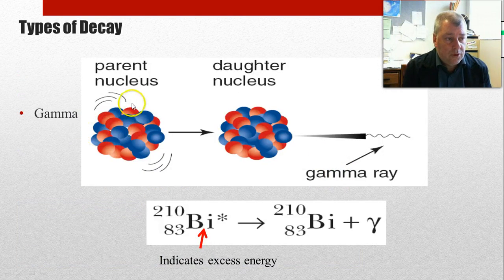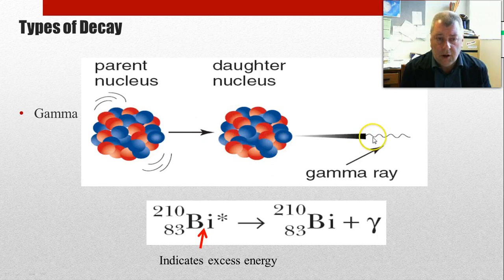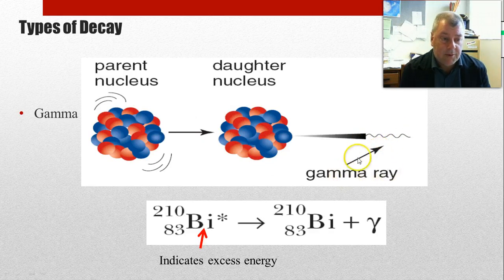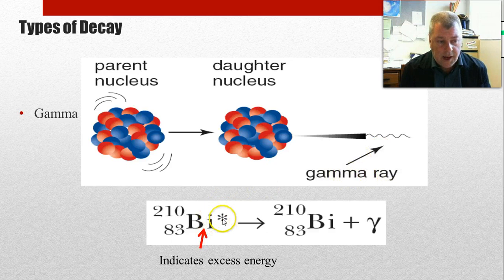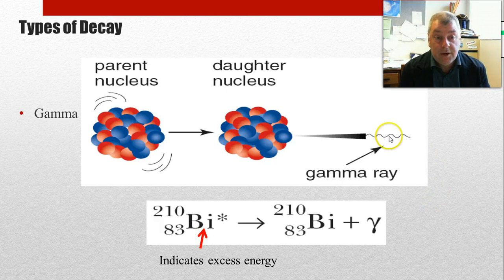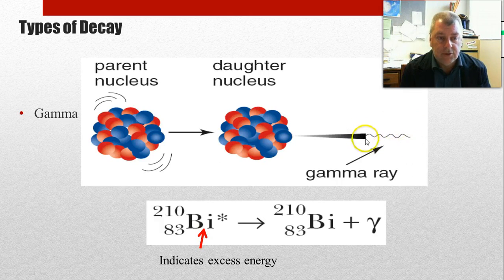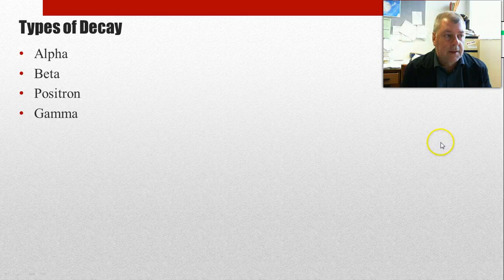Gamma decay is when the nucleus has excess energy, and the nucleus releases that excess energy in the form of a photon of energy, which is a gamma ray. And often we put an asterisk to indicate excess energy. Some people put an M, meaning metastable. And then we balance it, and then we put our gamma symbol there. Now what are the properties of gamma rays? Very penetrating because they're electromagnetic radiation, travel at the speed of light. Don't have high ionizing power, but can interact with matter, but usually not to a great extent. So there's our four types of decay that we need to know about in terms of physics.